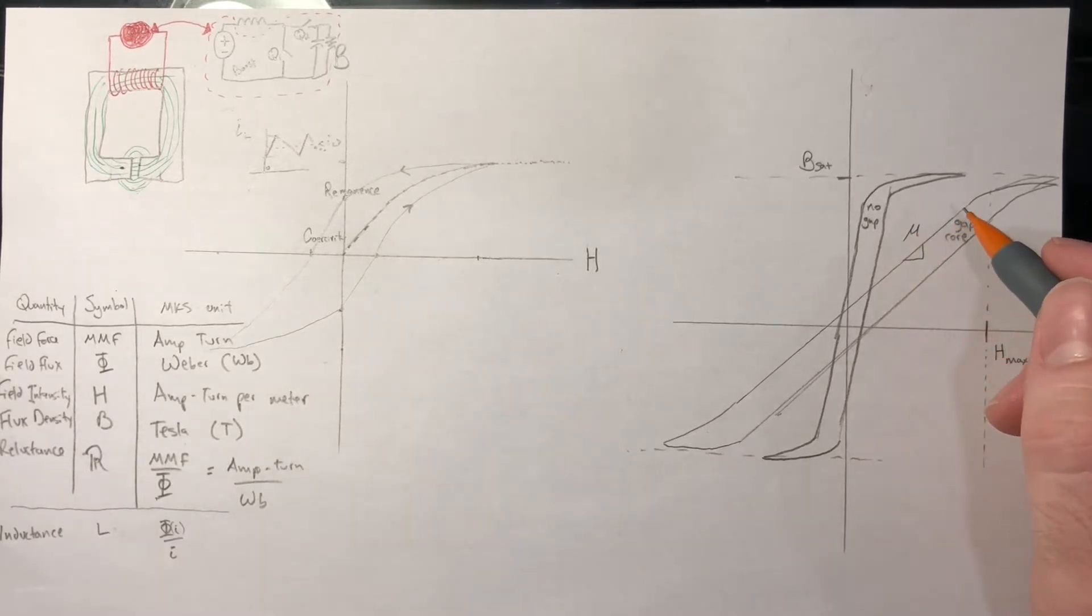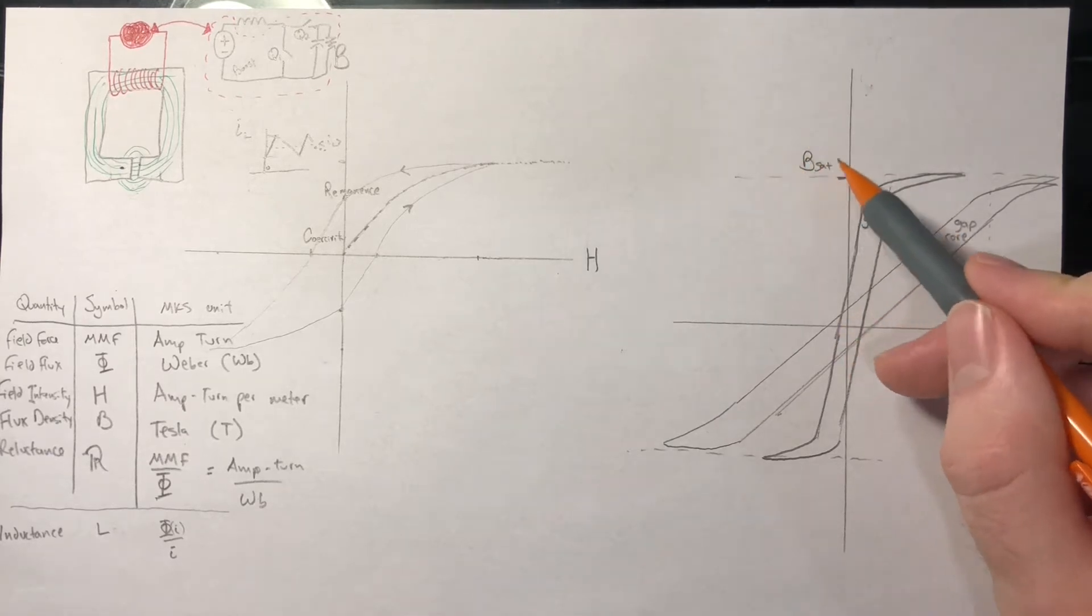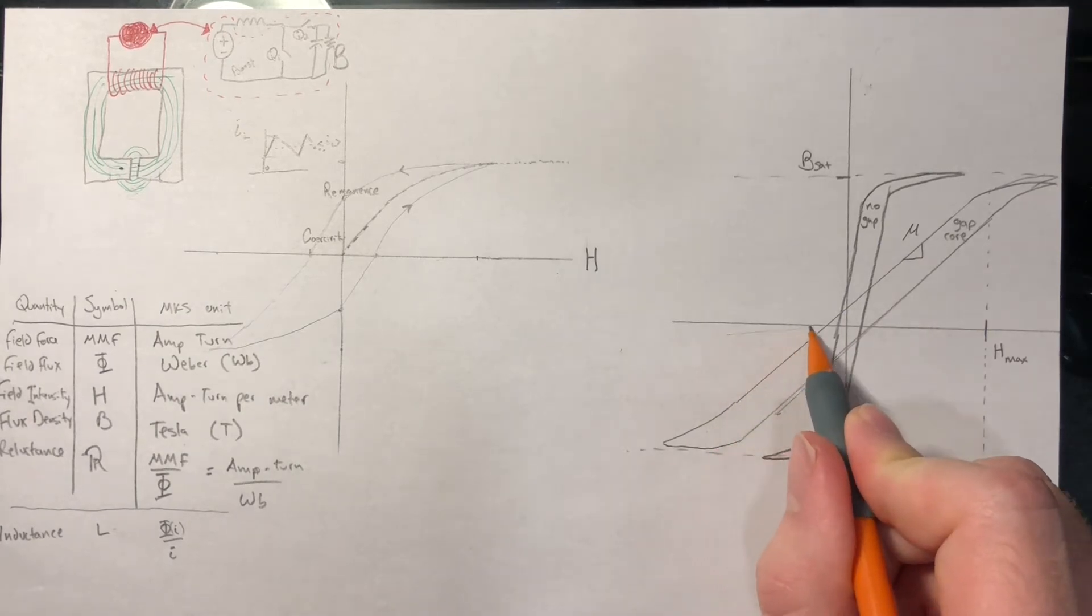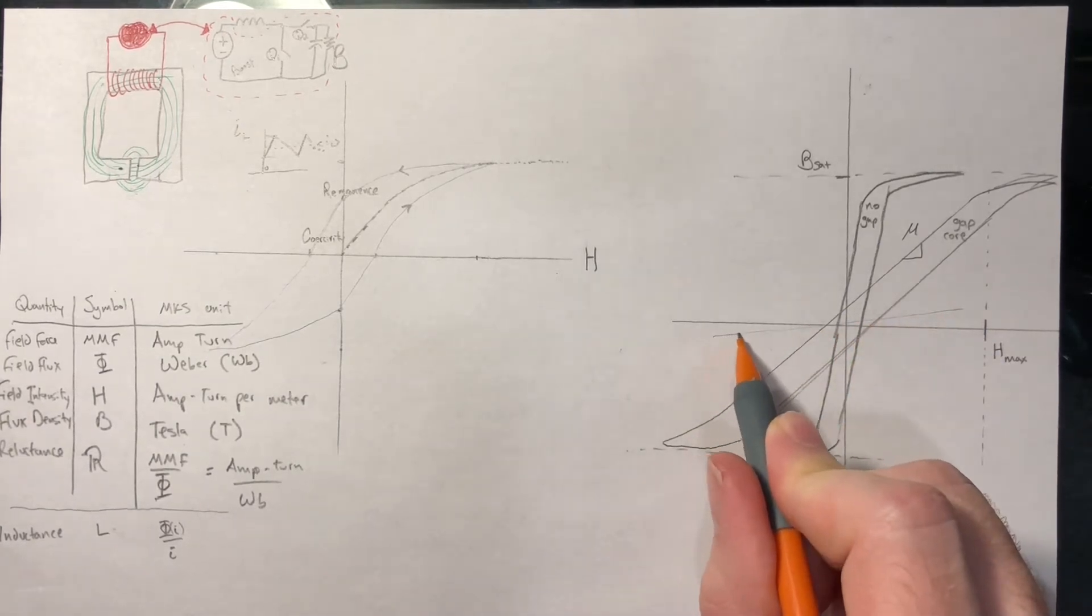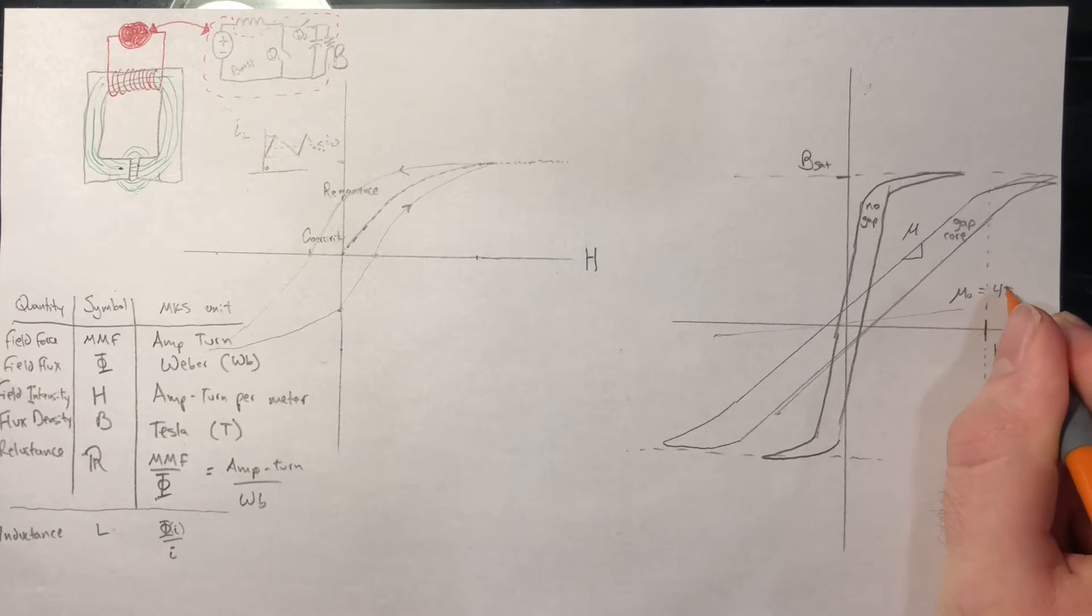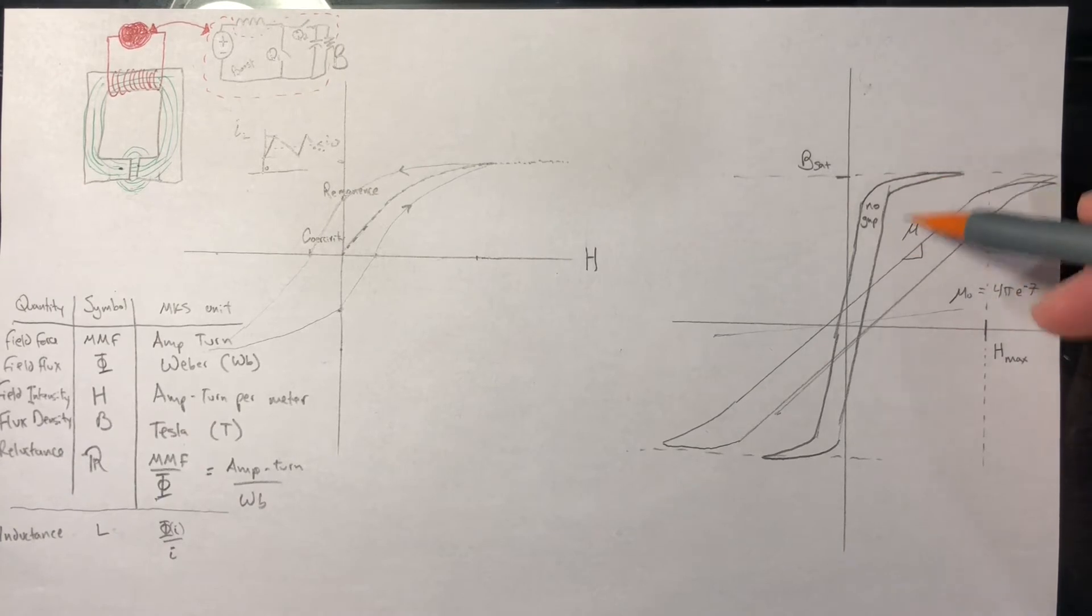Mu is indicative of how much magnetic flux you get for a given amount of excitation. For air, mu is really tiny. It's one of those universal constants you've probably heard about. Mu naught is 4 pi times 10 to the negative 7th. We can see something like steel would be thousands of times more permeable than air. So you get way more storage than air. That's why a lot of inductors have magnetic cores.